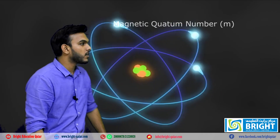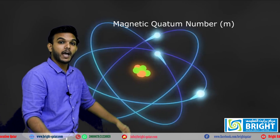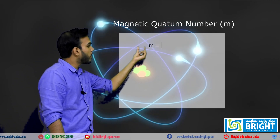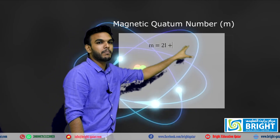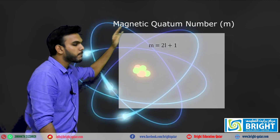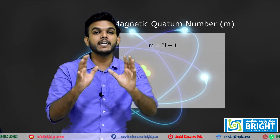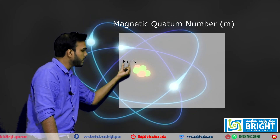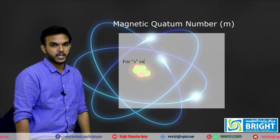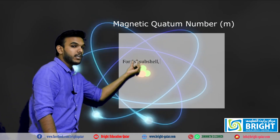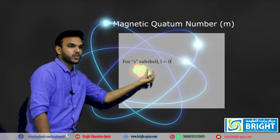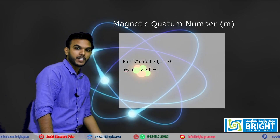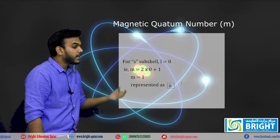The third is the magnetic quantum number. From the magnetic quantum number, we use the azimuthal quantum number to find it. The equation is: m equals 2l plus 1. From the magnetic quantum number we get the orientation of the subshells. For example, in the case of the s subshell, l is equal to 0, so m equals 2 into 0 plus 1, which equals 1. It is represented as 0.